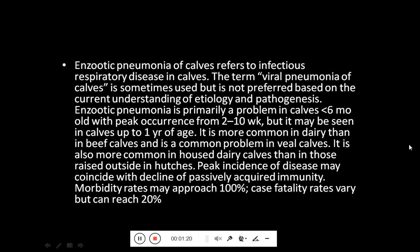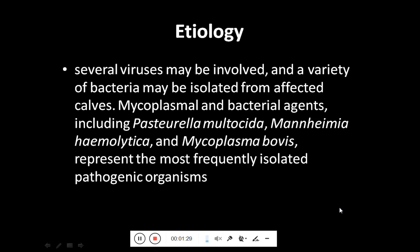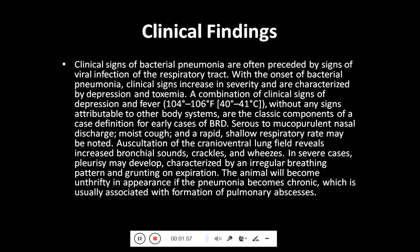Peak incidence of disease may coincide with a decline of passively acquired immunity, and the morbidity rate may approach up to 100 percent. Case fatality rates vary but can reach up to 20 percent. Regarding etiology, several viruses may be involved and a variety of bacteria may be isolated from affected calves, especially Mycoplasma and bacteria including Pasteurella multocida, Mannheimia haemolytica, and Mycoplasma bovis, which represent the most frequently isolated pathogenic organisms.